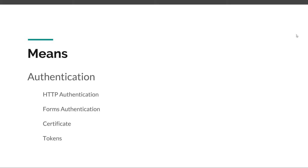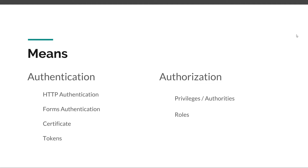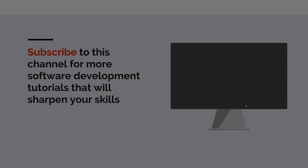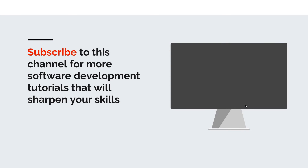Authentication identifies you as somebody in an app. Authorization, on the other hand, is all about privileges or authorities and roles. Based on your privileges or based on the role you have inside an app, you are allowed or not allowed to do certain things.